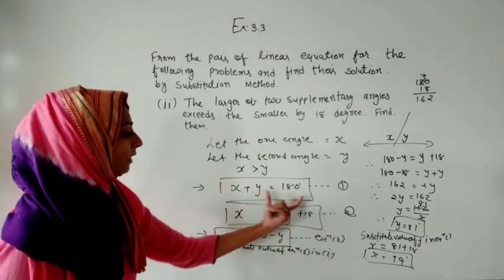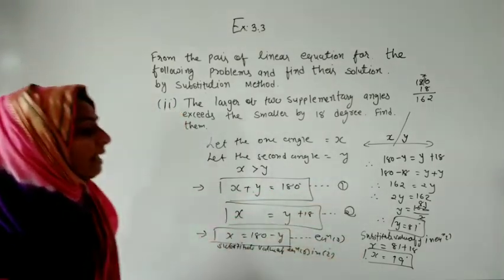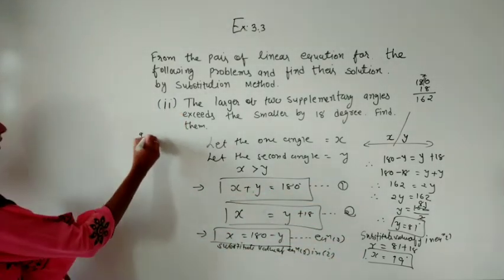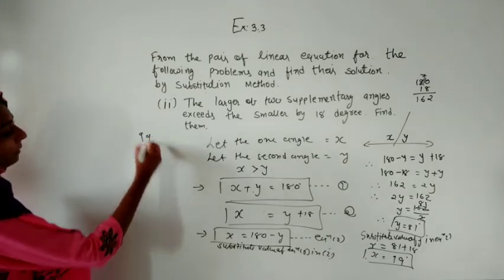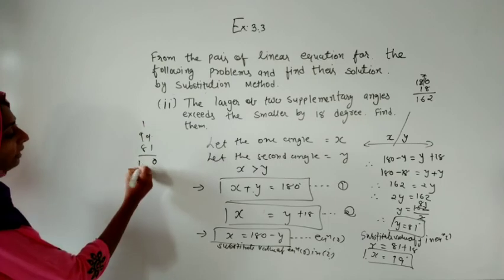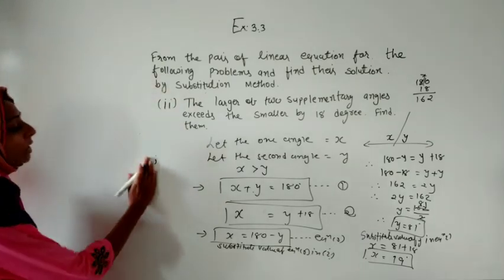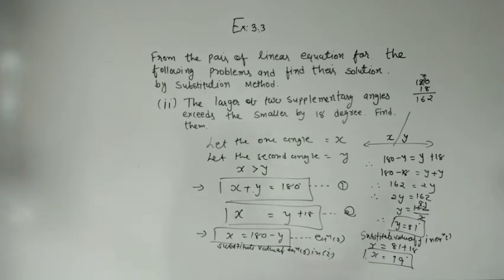Let us verify: the two angles are x equals 99 degrees and y equals 81 degrees. Checking: 99 plus 81 gives 9 plus 1 equals 10, carry 1, then 9 plus 8 plus 1 equals 180. The sum is 180 degrees, confirming the answer is correct. This is the end of this question.